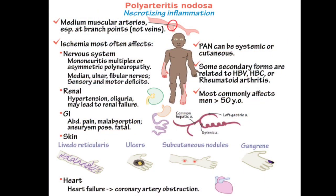Polyarteritis nodosa is a vasculitis affecting the medium muscular arteries at branch points — not veins. Ischemia can affect the nervous system causing mononeuritis multiplex, the renal system causing hypertension, and the GI system causing abdominal pain, malabsorption, aneurysms, livedo reticularis, ulcers, subcutaneous nodules, and gangrene. It can be systemic or cutaneous. Some secondary forms are related to hepatitis B, C, or RA. It most commonly affects men over 50 years.